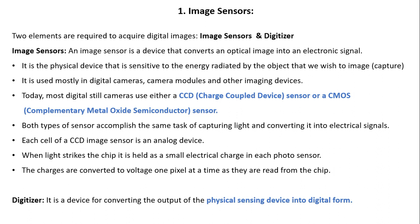First is the image sensor. Two elements are required: the image sensor and the digitizer. An image sensor is a device that converts an optical image into an electrical signal. It is a physical device sensitive to energy radiated by the object we want to capture, mostly used in cameras and other imaging devices. Today most digital still cameras use either CCD (charge-coupled devices) or CMOS (complementary metal-oxide semiconductor) sensors. Both types accomplish the same task of capturing optical light and converting it to an electrical signal.